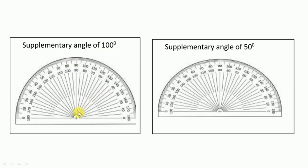Next, the supplementary angle of 100 degrees. First we draw the 180 degree line and then draw 100 degrees. The supplementary angle of 100 is 80 degrees — 80 degrees is shown here.